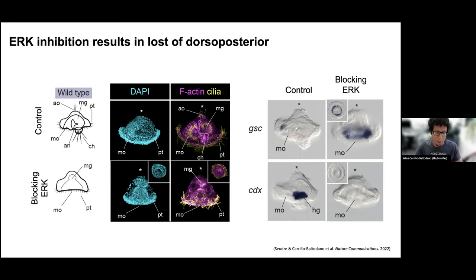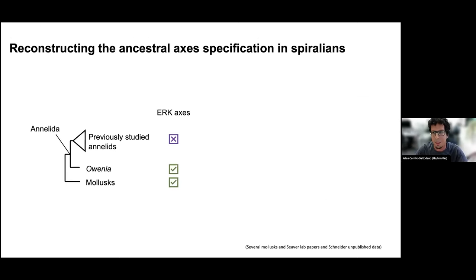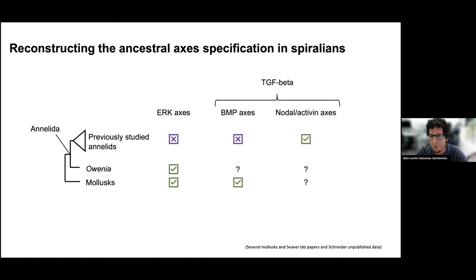We were very happy because based on the phylogenetic position of Owenia, we can compare it to mollusks and other spiralians and interpret that this might be the ancestral way to set up the organizer in at least both mollusks and annelids. The caveat, as many developmental biologists know, is that usually BMP and TGF-beta are the ones that set up the DV axis in the majority of animals. Again, in the annelids studied so far, BMP doesn't seem to play a role, but a different TGF-beta — nodal activin — does. So we wanted to see, now that we have this worm, what we can find.